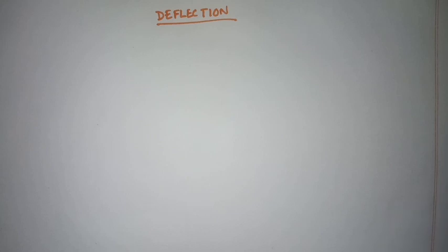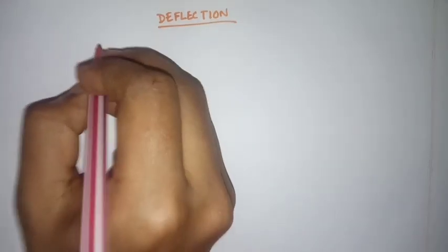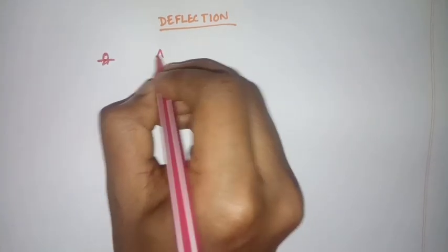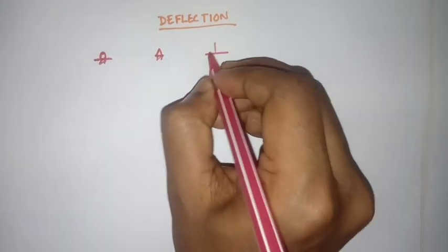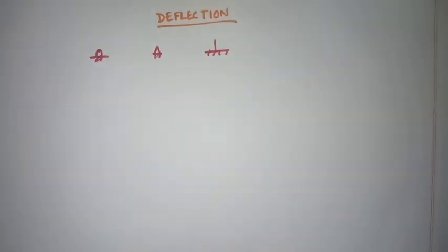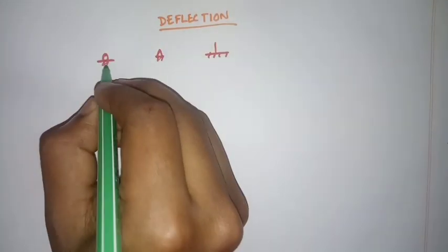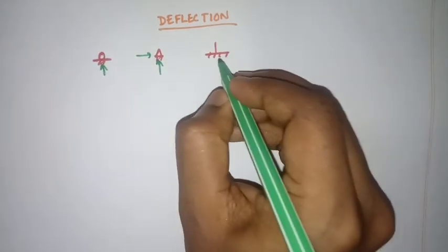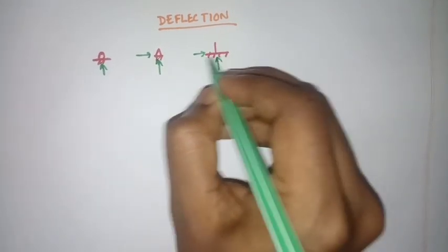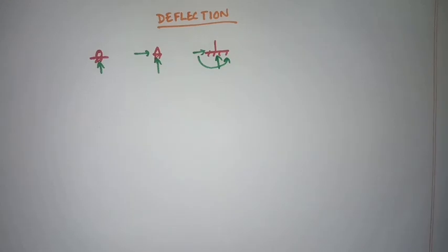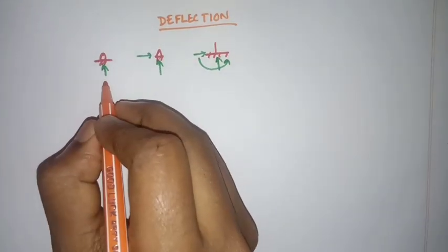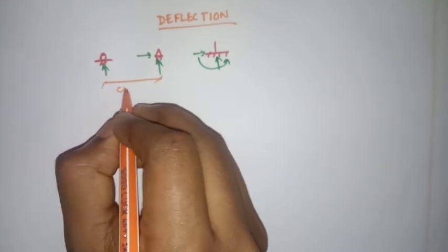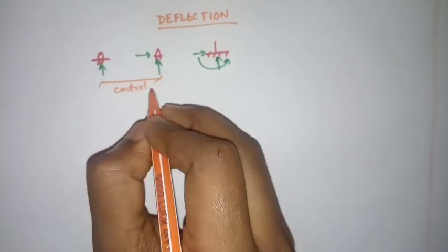First you have to learn about the supports. Here I will draw three types of support: roller support, pin support, and fixed support. In roller support there is one reaction, in pin support there are two reactions, and in fixed support there are two reactions and a moment.